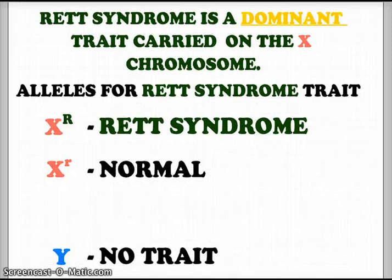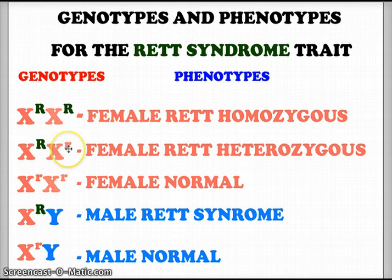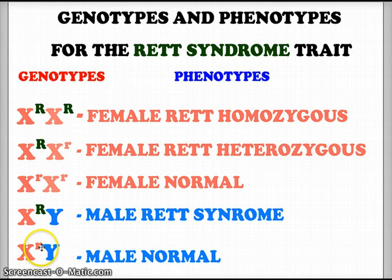Rett syndrome is a dominant trait carried on the X chromosome. The alleles are: X^R for Rett syndrome and X^r for normal, while Y carries no trait. Genotypes and phenotypes: X^R X^R is a homozygous female with Rett syndrome; X^R X^r is a heterozygous female with Rett syndrome; X^r X^r is a normal female; X^R Y has Rett syndrome; and X^r Y is a normal male. Because most females with Rett syndrome never have offspring, it very rarely gets passed to male offspring.